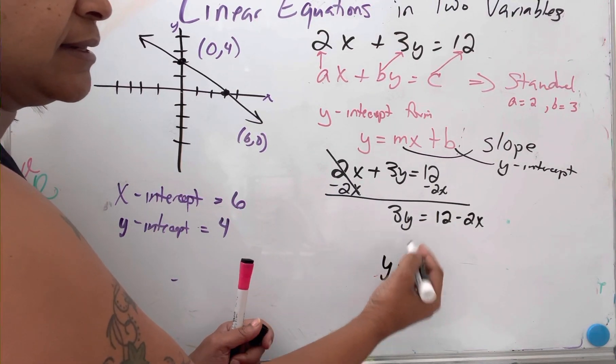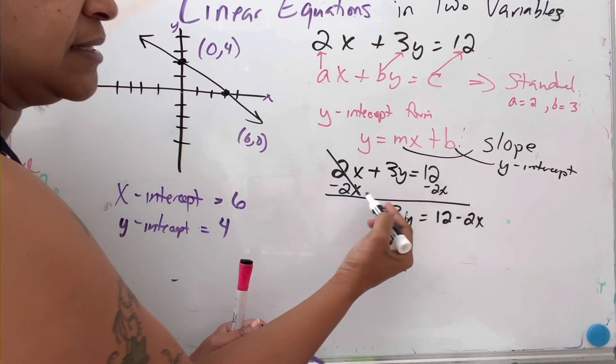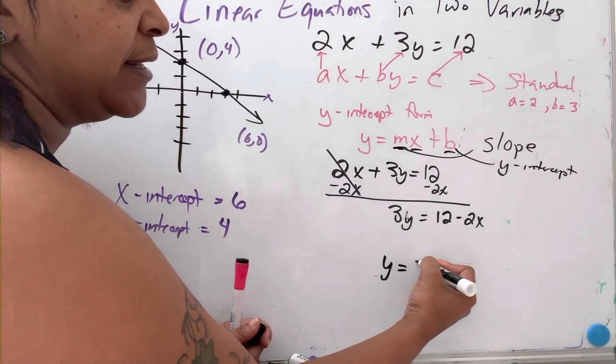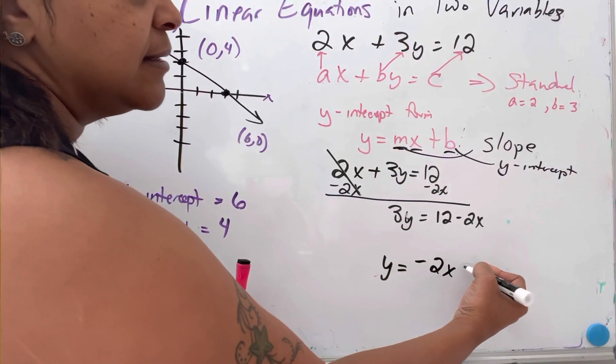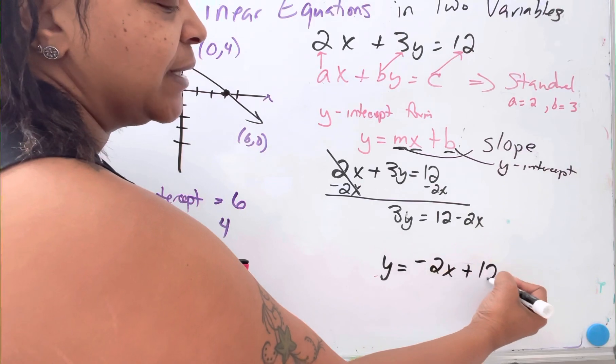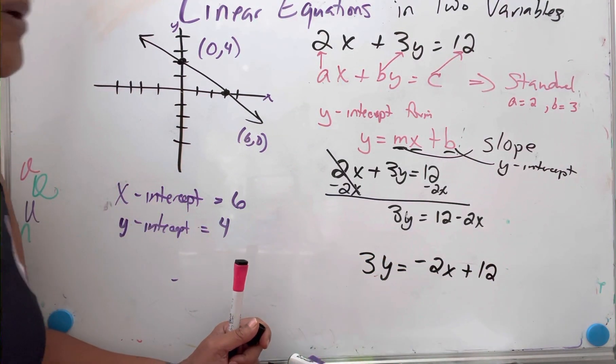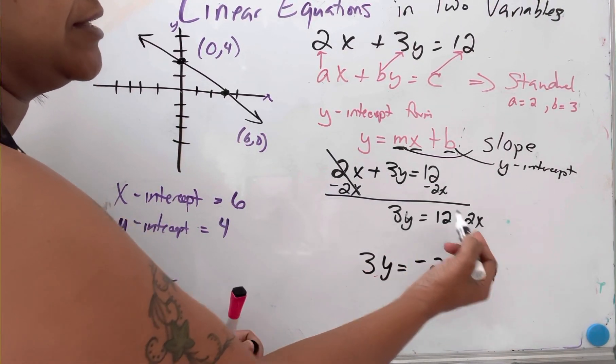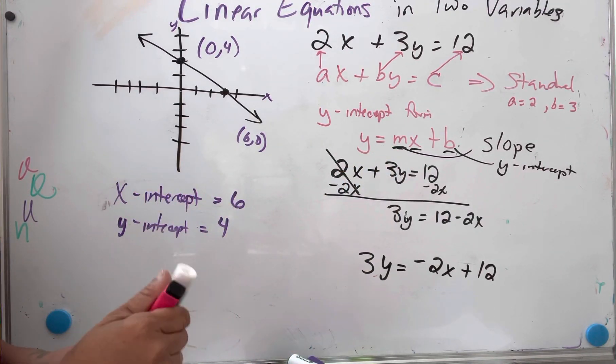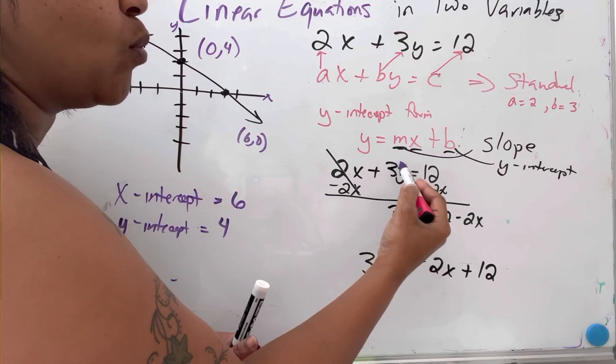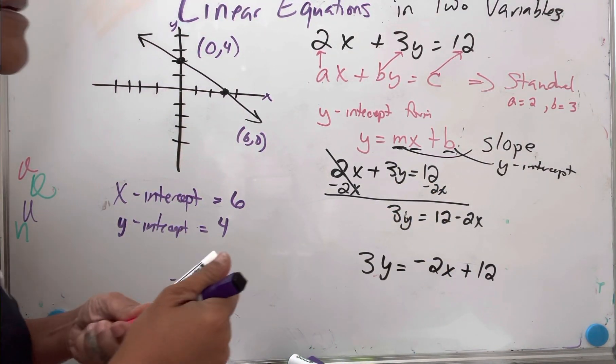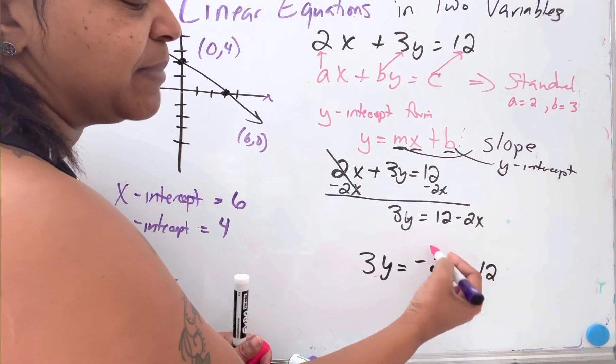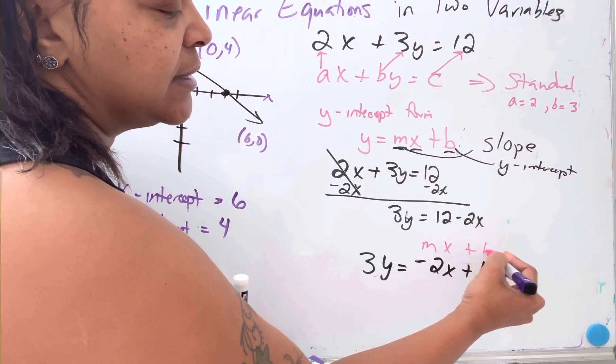It almost looks right. Since this is the form mx plus b, let's put the x part in front: negative 2x plus 12. So 3y equals negative 2x plus 12. All I did here was change this equation to make it look more like this one. I'm trying to get this to look like y equals mx plus b.